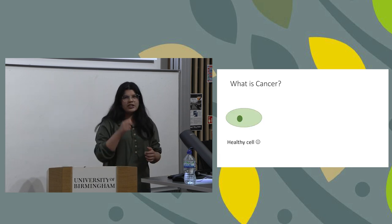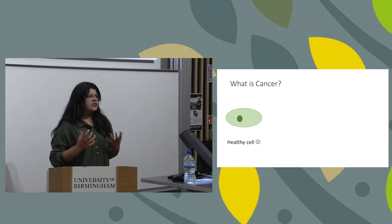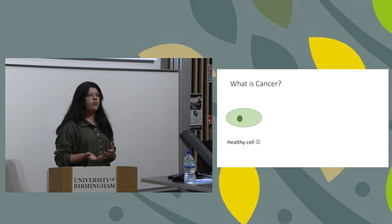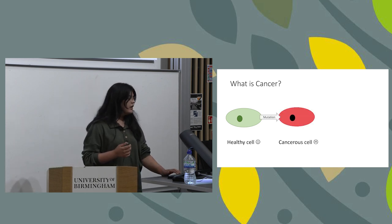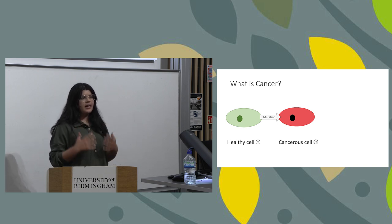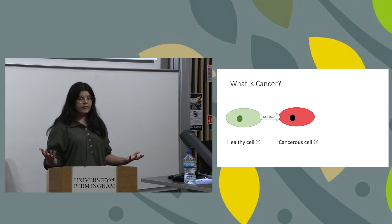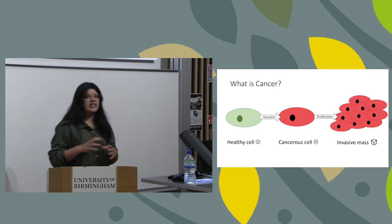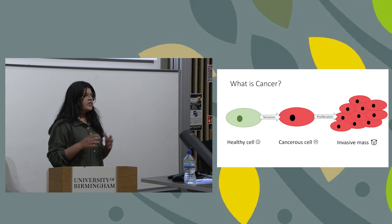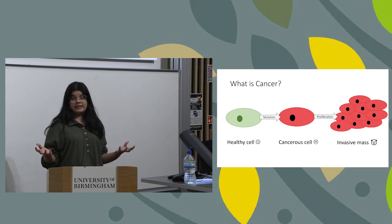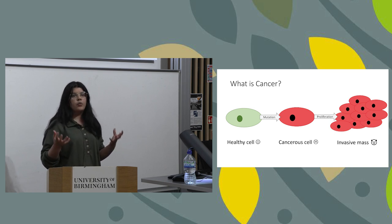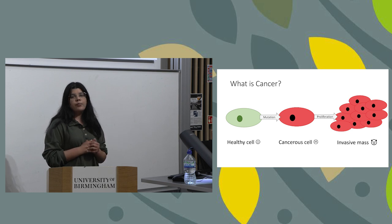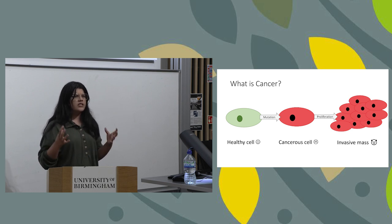So, a little bit of background before we begin: what actually is cancer? Well, cancer is quite a complex disease, but essentially it starts off with a relatively healthy cell that acquires a mutation within its DNA. This causes the cell to become cancerous, essentially losing its capacity to control its growth and replication, causing the formation of an invasive mass. Cancer is actually made up of many different cell types and tissues that work together to make this mass, and it can occur pretty much anywhere in the body.